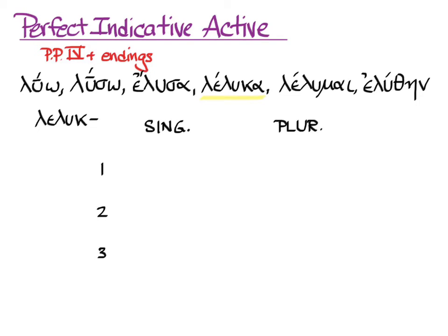Now we need the endings and a chart to put them in, singular and plural, first, second, and third person. Here are the endings of the singular: α, ας, ε, and the third singular can have a nu movable. Here's the plural: αμεν, ατε, ασι, which can also have a nu movable.